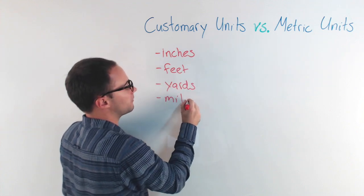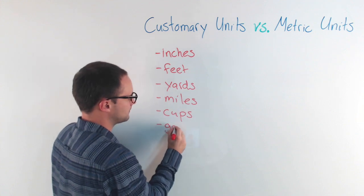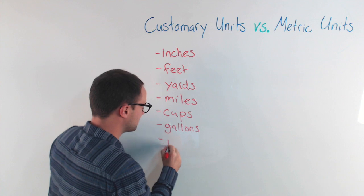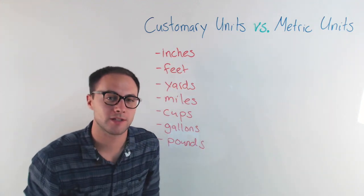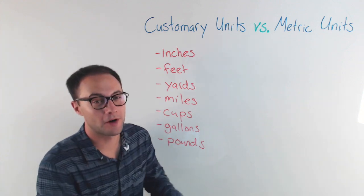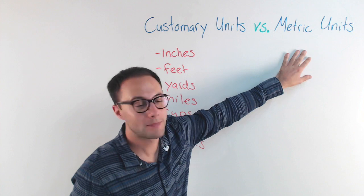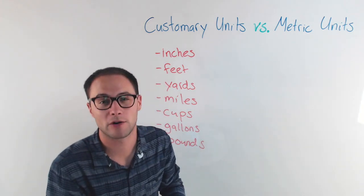And then for volume, you've got things like cups, gallons. We've got pounds. Those are your customary units. If you're from the U.S., that's what you're used to. If you're from another part of the world that's not the U.S., you're used to the metric system. Metric units are very simple. They're really easy. They're all based on the power of 10.